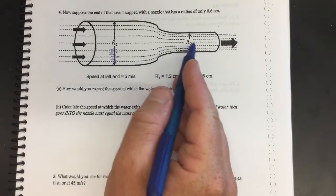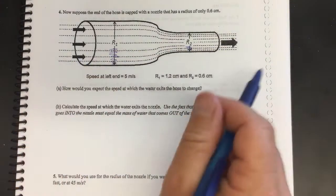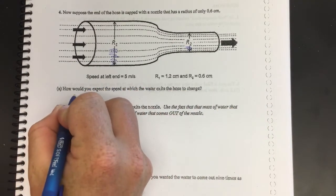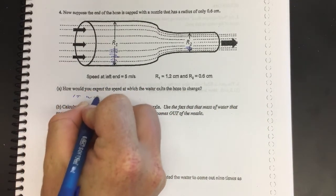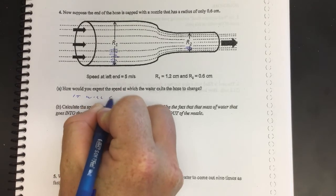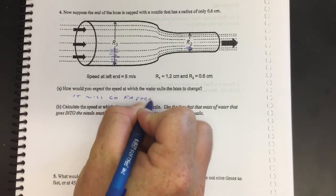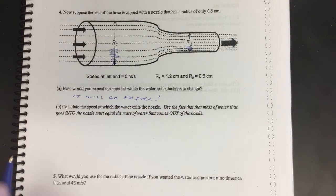You know from common experience if you put a nozzle on the hose, you can shoot the water out farther. So it's going to go faster, it will go faster.